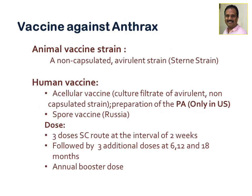For animal vaccination, the Sterne strain is used. For human vaccination, an acellular vaccine is used — a culture filtrate of an avirulent non-capsulated strain with purified protective antigen, used only in the US. A spore vaccine is also used in Russia. The human vaccine dosage is three subcutaneous doses at two-week intervals, followed by three additional doses at 6, 12, and 18 months, with annual booster doses to maintain antibody titers.